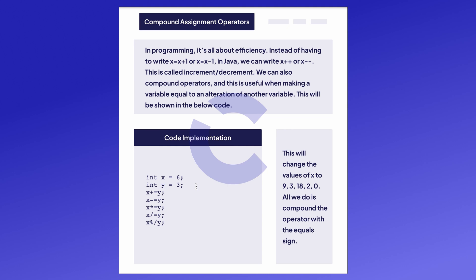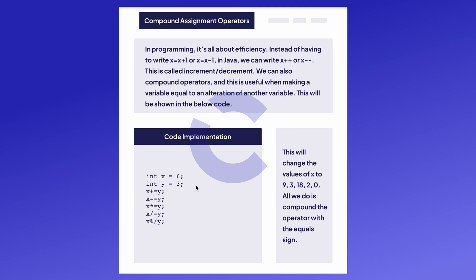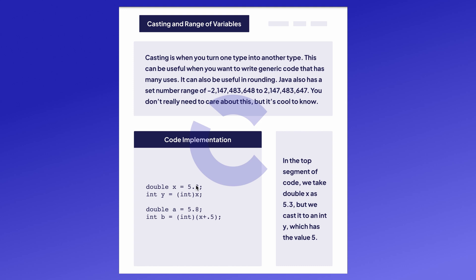Same thing goes for if you want to decrement your variable by 1, instead of x equals x minus 1, you would write x--. Another thing you can do is let's say you have x equals 2 and you want to make that 4, so you would write x += 2. This is basically just saying x equals x plus 2, just shorter.